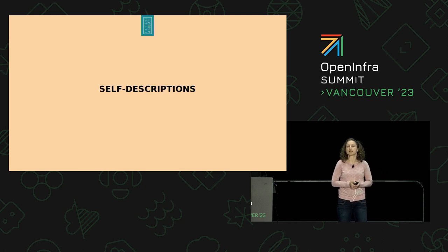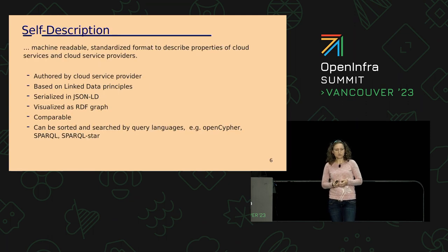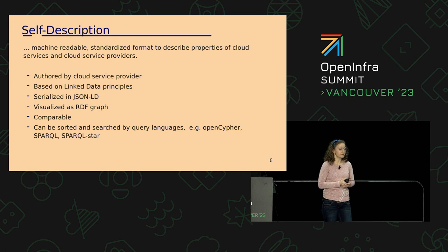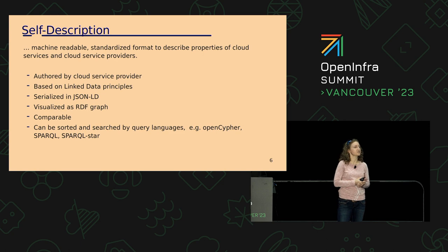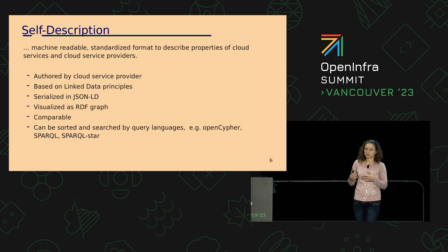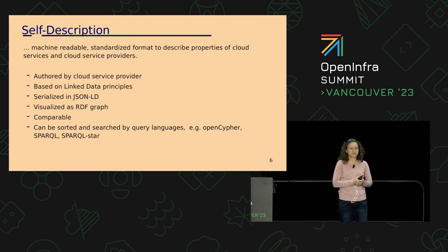What are self-descriptions? Self-descriptions are machine-readable standardized formats to describe the properties of clouds, cloud providers, and cloud services. They are authored by the cloud provider. They are based on linked data principles. They are serialized in JSON-LD. They can be visualized as an RDF graph. They are comparable because it's a standardized and machine-readable format. And you can also sort and query self-descriptions with, for example, OpenCypher, SPARQL, or SPARQL-Star.